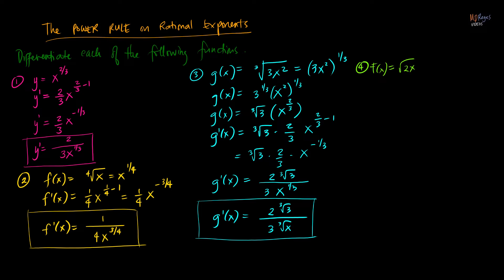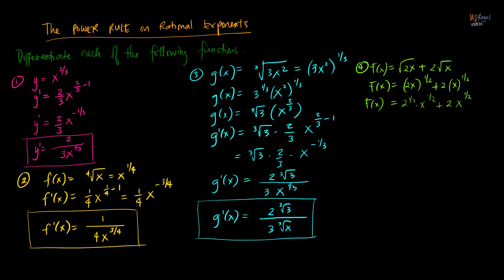Next example: f of x equals the square root of 2x plus two times the square root of x. Rewriting the radicals using rational exponents: f of x equals 2x raised to one-half plus 2x raised to one-half. In the first term, both 2 and x are raised to one-half, giving two raised to one-half times x raised to one-half. So f of x equals square root of 2 times x raised to one-half plus 2x raised to one-half, setting aside the constants before differentiating.